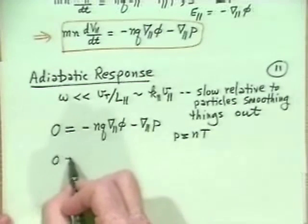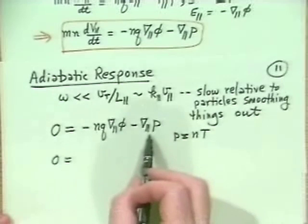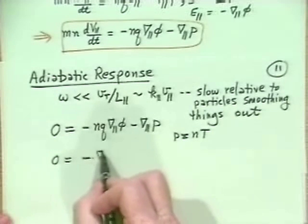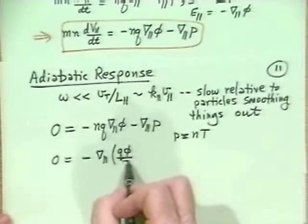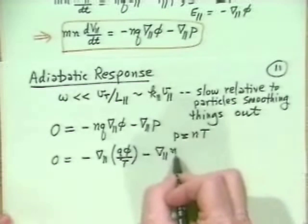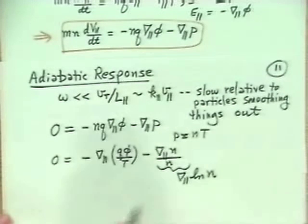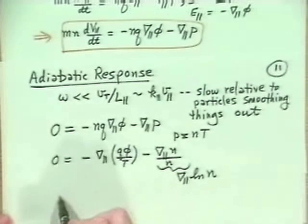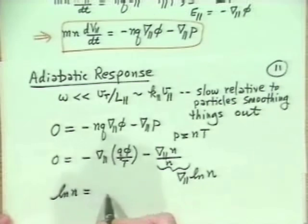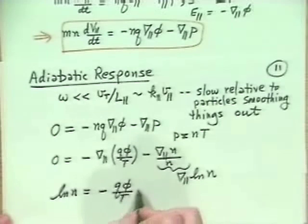We take P equals nT with temperature constant, then divide through by n and T. The equation becomes: 0 equals minus grad_parallel of (q phi / T) minus grad_parallel n divided by n, and that last term is none other than grad_parallel log n. This form is easy to integrate directly.